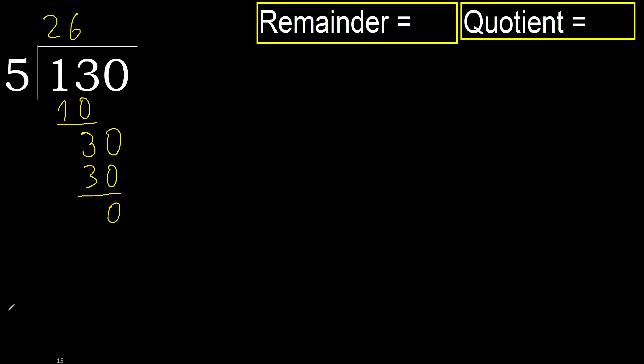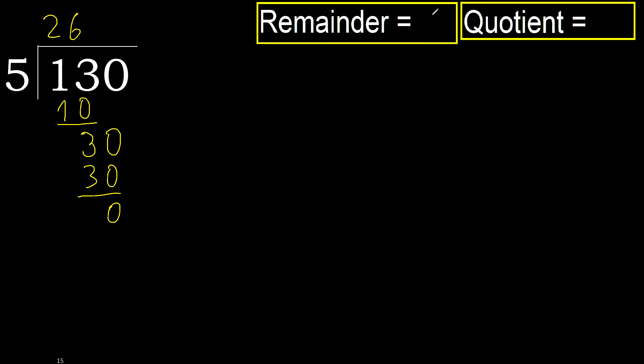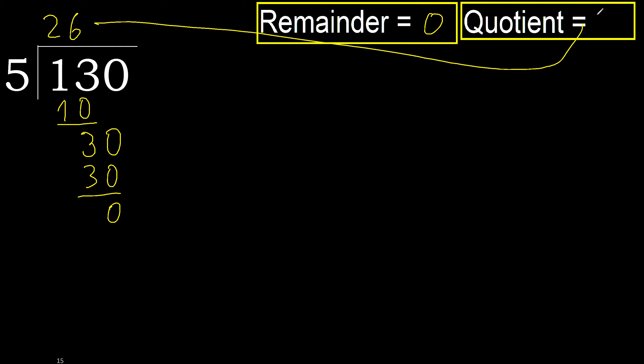30 minus 30 is 0. Next — that is not a number, therefore finish it.